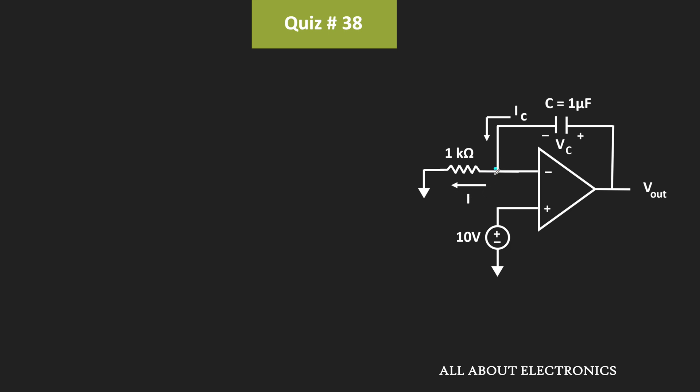If we apply KCL at this node, then current IC equals I. Moreover, because of the negative feedback, we can apply the concept of virtual ground. That means V+ equals V-.